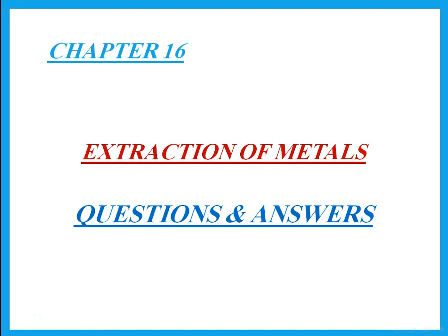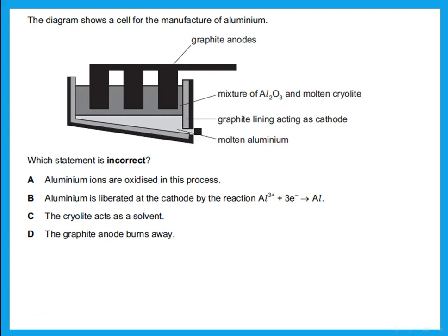Hello again, this is the questions and answers on extraction of methods. Were you able to do them? They're not that difficult, so you should be able to do it. The diagram shows the cell for manufacture of aluminium. Which statement is incorrect? Again, be careful — is he asking for correct or not correct?